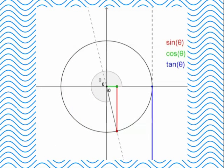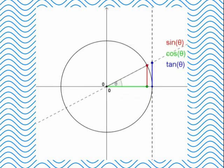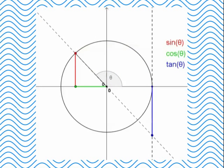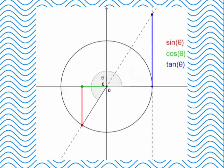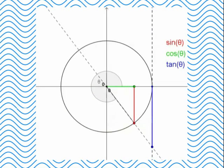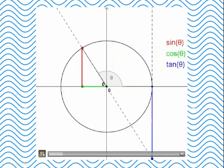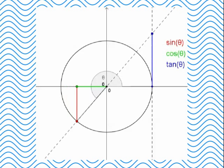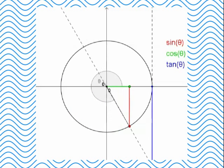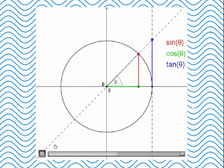Sine starts off being 0, gets larger, gets smaller again, then goes negative and back to 0. Cosine starts at 1, gets smaller, gets bigger, smaller, bigger. Tangent starts at 0 and gets larger and larger until we reach the issue at the y-axis where the radius is never going to meet the tangent. We can see how these values change as we change theta, and that's all going to relate to how we construct the graphs of sine, cosine and tangent.